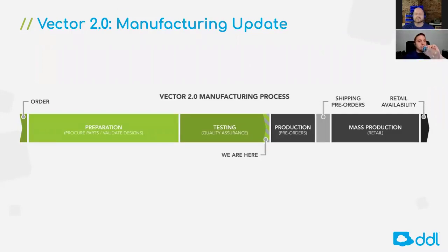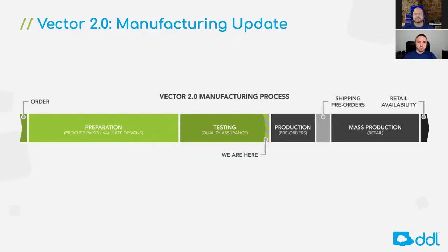One last question before we move on, about Oscar. The attendee would like to know: will you be able to use the open source kit for robots and Escape Pod for Vector 1.0? The Escape Pod was originally designed for Vector 1.0, and that compatibility will carry over for Vector 2.0. As far as Oscar, yes — both of those products will be compatible with both iterations or generations of the robots.